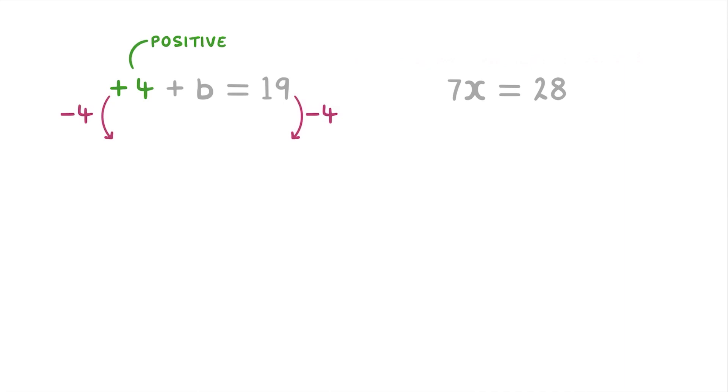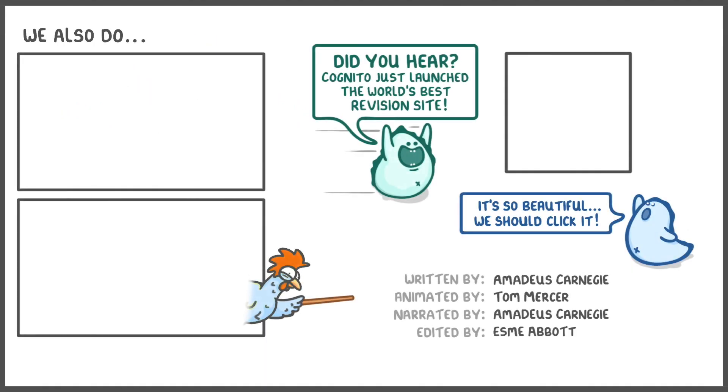So on the left, the plus 4 and minus 4 will cancel out to leave us with just B, and on the right we'll do 19 minus 4 to get 15, so B equals 15. And finally for this last one, 7X equals 28, you just divide both sides by 7, so X must equal 4. And that's it for this video, so hope you found that useful and we'll see you again soon.